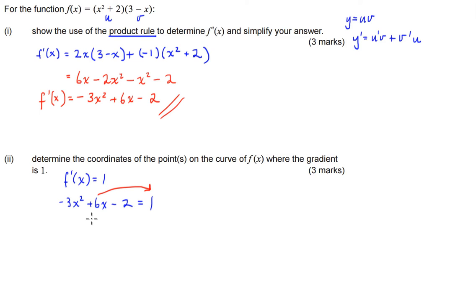So what I'm going to have left on this side is 0 equals 3x squared minus 6x plus 3. So we need to solve this equation. What I'm going to do is first of all factorize the entire thing by 3. 0 equals 3 bracket x squared minus 2x plus 1.